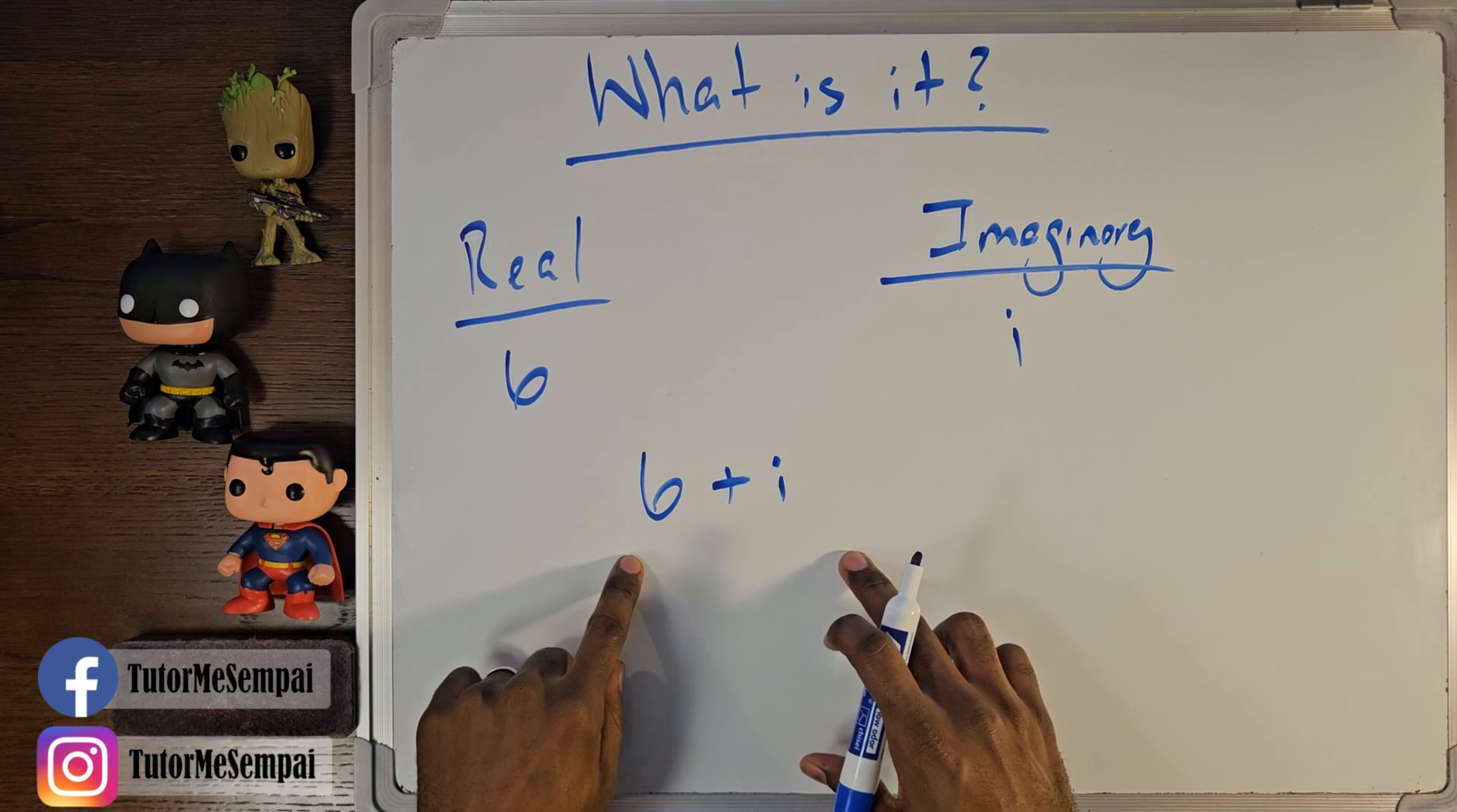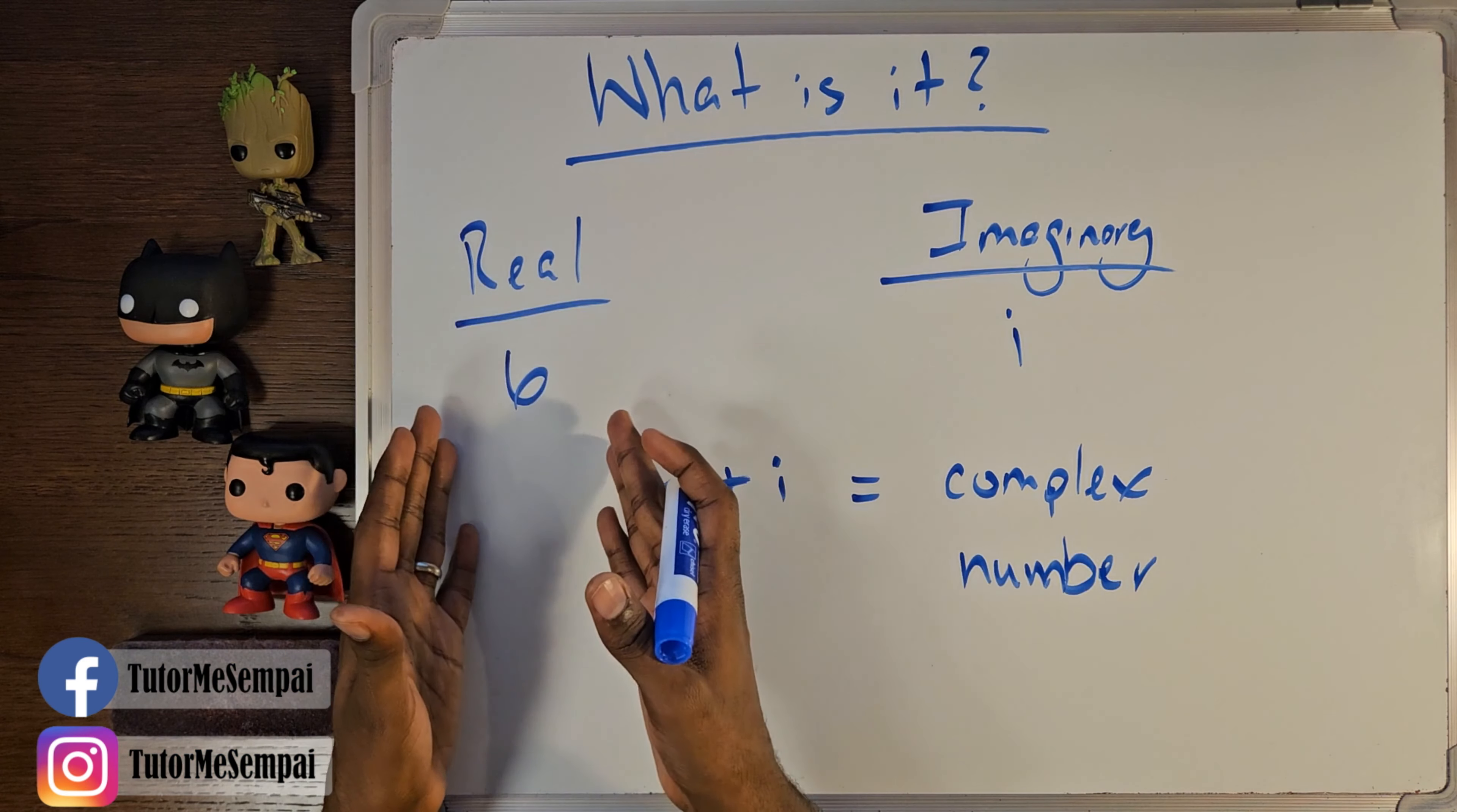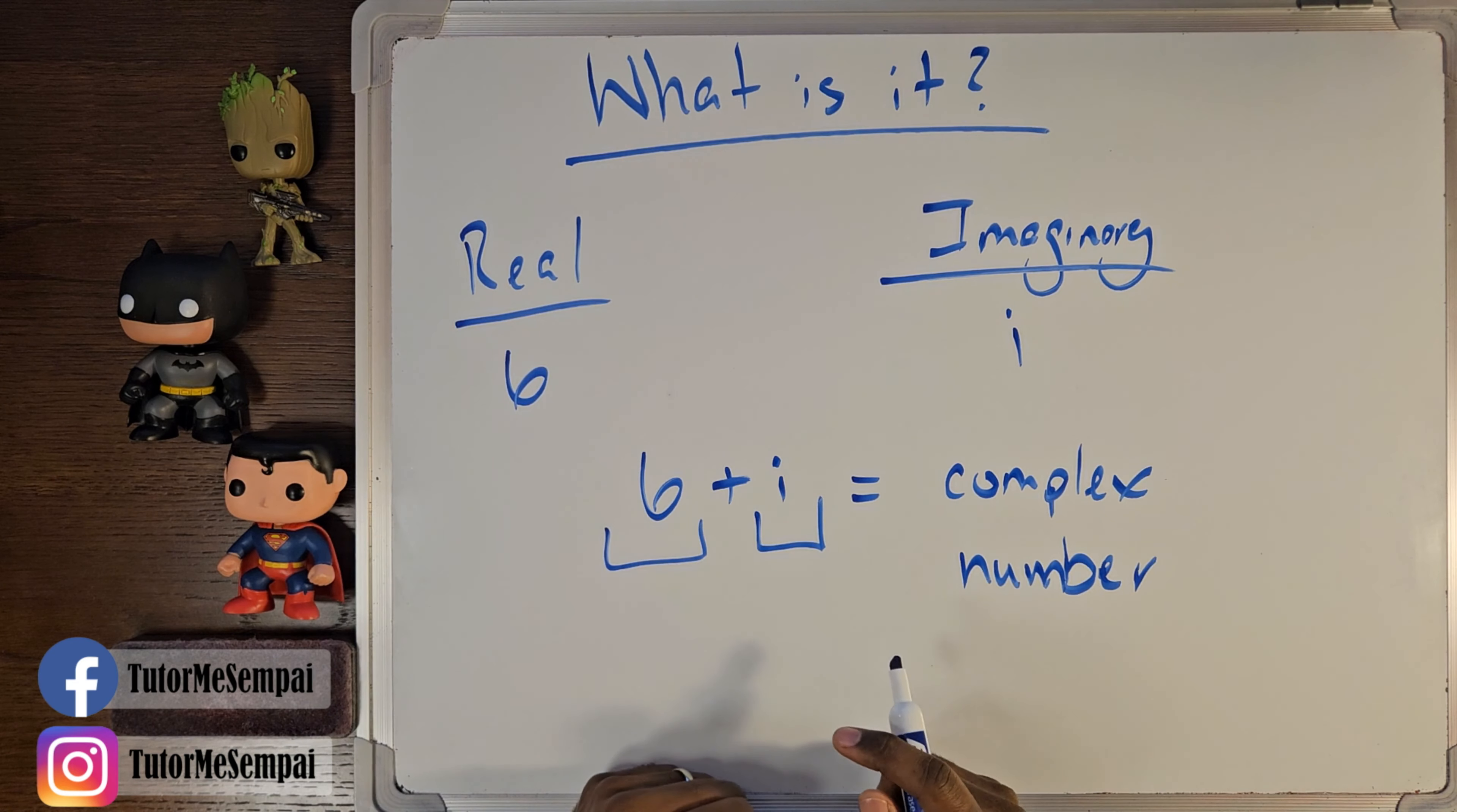When you do something like this, you get what we call a complex number. And a complex number is just any number that has a real component and an imaginary component. So if you look at this, you can see that the real component, the 6, is here, and your imaginary component, the i, is here.